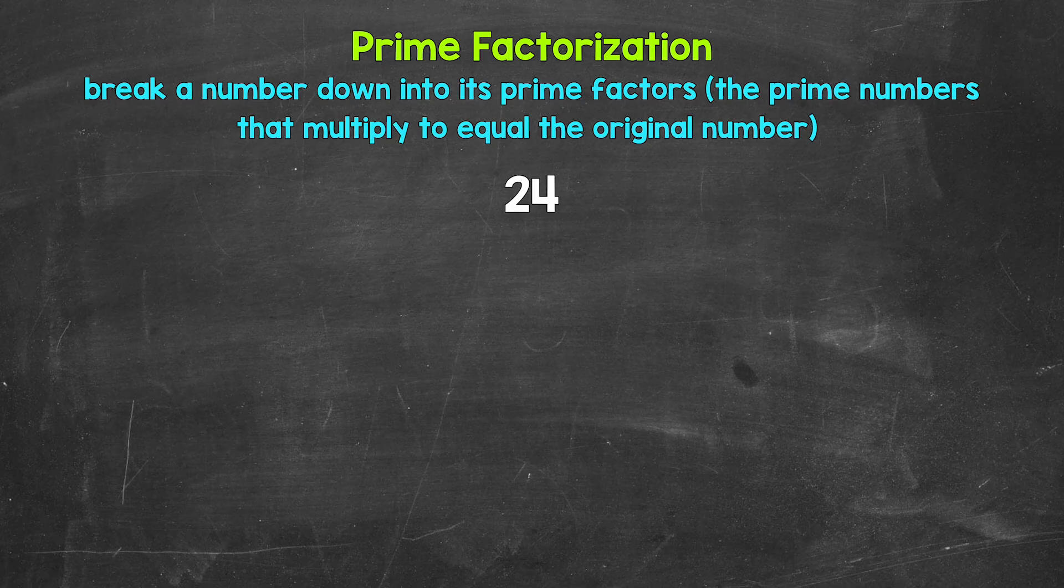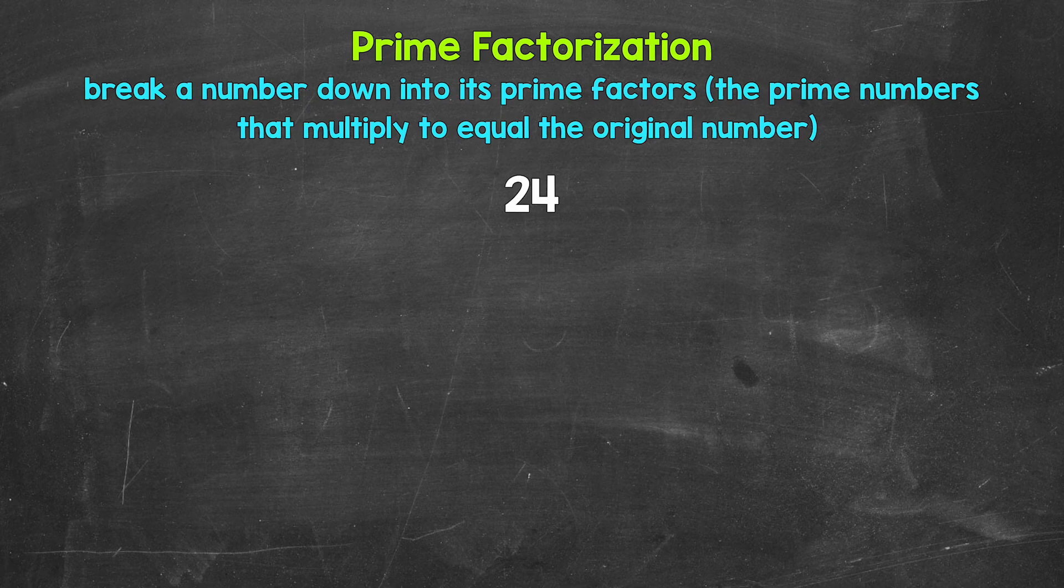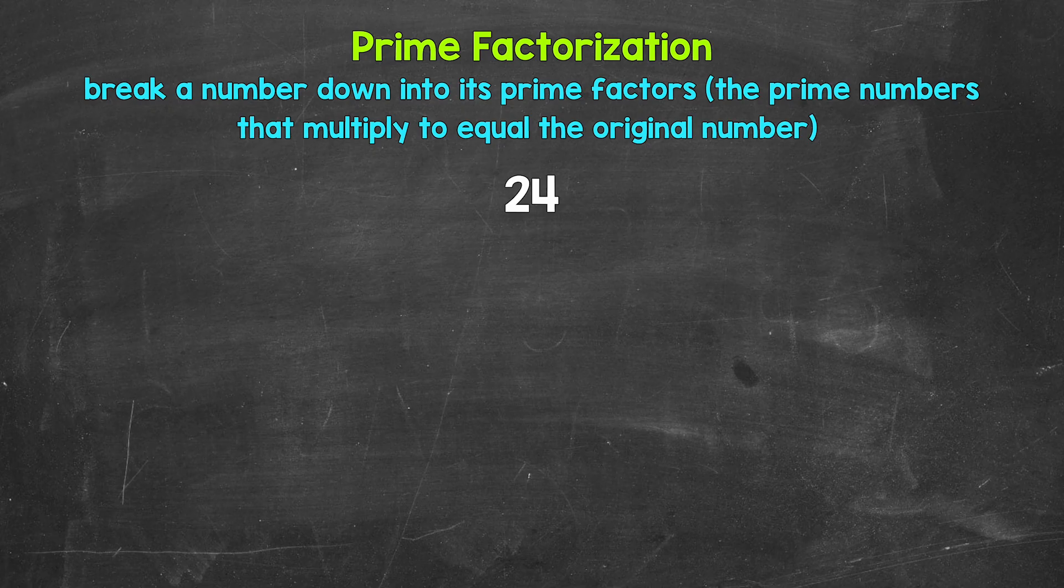Looking at 24, we need to start breaking this down by thinking of two factors, two numbers that multiply to give us 24. Two and 12 are factors of 24. Two times 12 equals 24. So let's break this down into two and 12.